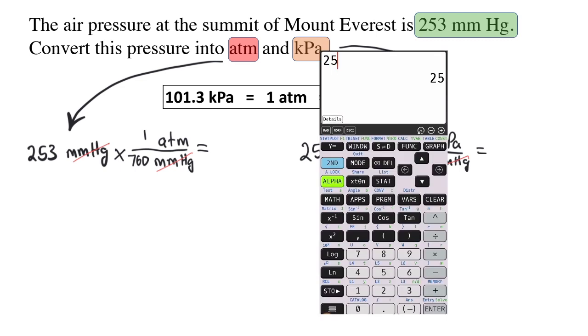For the first conversion, multiplying by 1 over something just means to divide. So 253 divided by 760 equals 0.333 atmospheres.